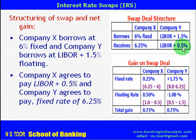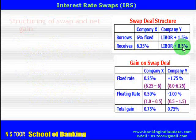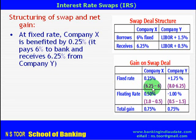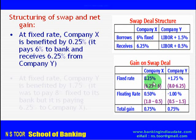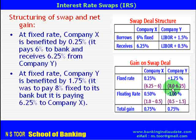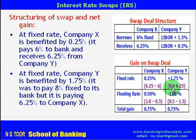Now, how much gain is going to be there on this swap deal? At the fixed rate of interest, Company X is benefited by 0.25% because Company X will receive 6.25% from Company Y and will pay 6% to the bank, so there is a gain of 0.25%. Similarly, at fixed rate, Company Y is gaining by 1.75% — they will pay 8% fixed rate to the bank but only 6.25% to Company X, so their gain is 1.75%.